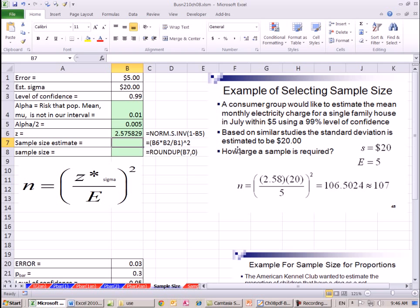Now we can calculate our estimate of a sample size. Equals in parentheses, we'll take our z times our estimate of sigma divided by our error. Close parentheses, and then caret 2. All of that has to be squared. 106. Now we need to round up. We're going to use the round up function.